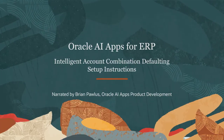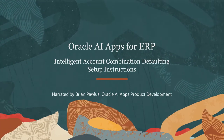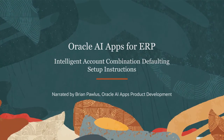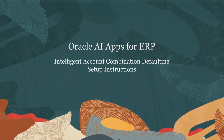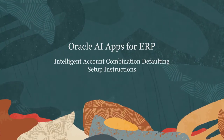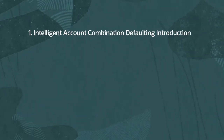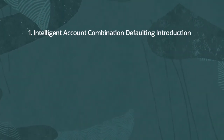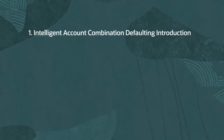Hello, my name is Brian. In this video, we're going to walk through the setup steps in order to enable the Oracle AI Apps for ERP feature called Intelligent Account Combination Defaulting. First, I'll go through a short introduction of the feature, just to remind everyone what Intelligent Account Combination Defaulting does.